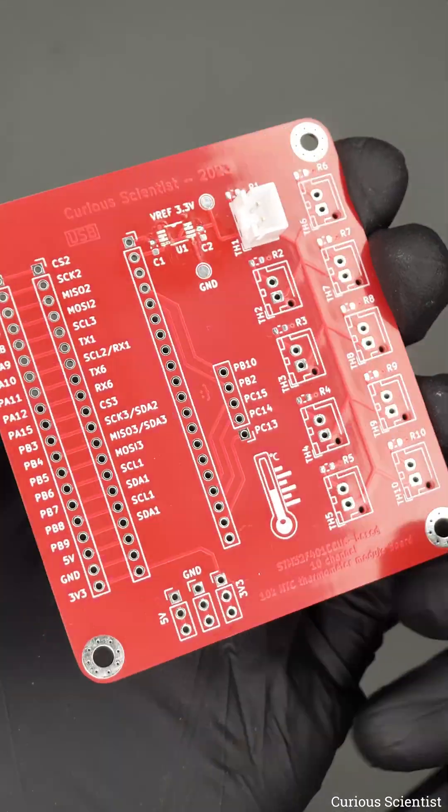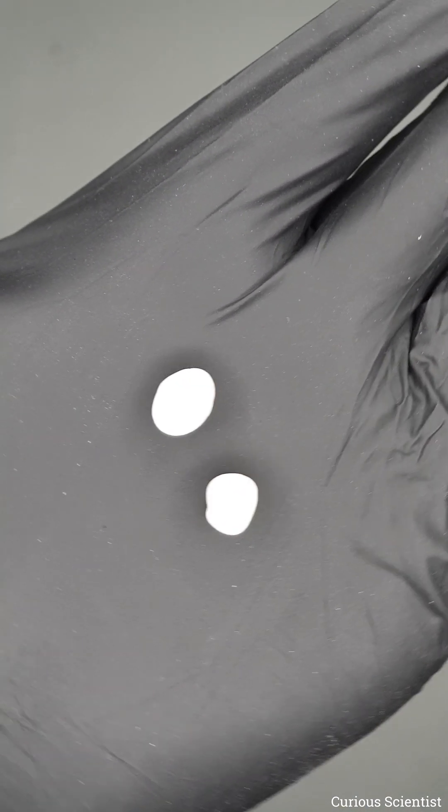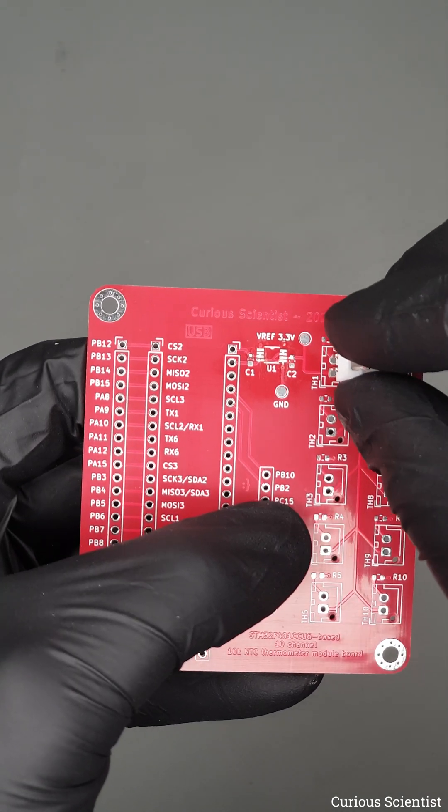But other types of components might fall out when you flip the board. So the solution is to use white tack. You can form a small ball of it and then use it to stick the component to the printed circuit board, and when you flip the board it will not fall out.